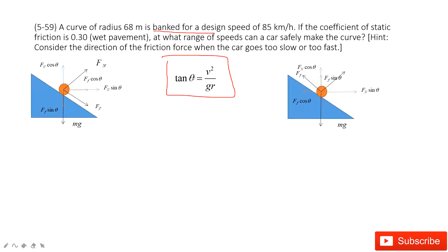In this one, we can find its angle theta because v is given and r is given. So when we want to find this range, first situation, we consider the friction pointing down.